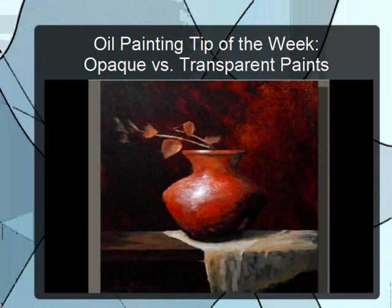The secret is simple: if you want advancing planes, use opaque paint; if you want receding planes, use transparent paint. See how opaque this is — see how much it advances over the background. They're almost the same color, but this advances because it's opaque and this recedes because it's transparent. Very simple but very important to know.